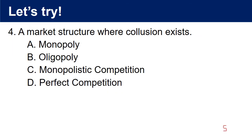Question 4: A market structure where collusion exists. A. Monopoly. B. Oligopoly. C. Monopoly. The answer is B. Oligopoly.